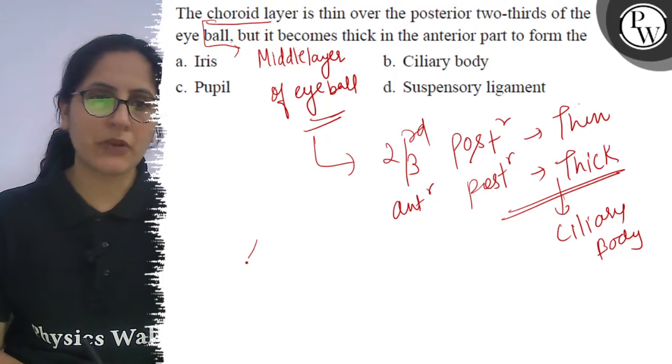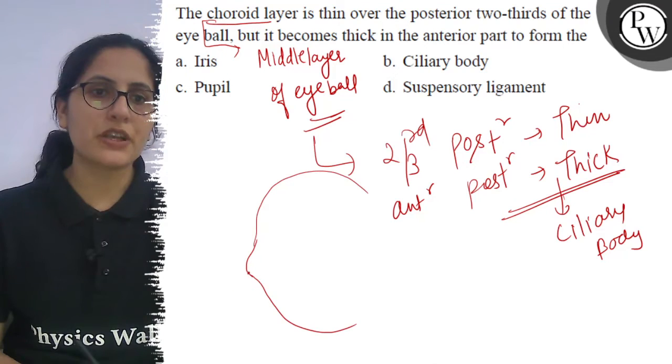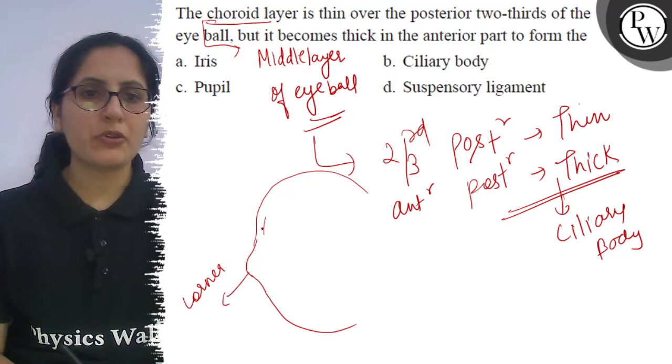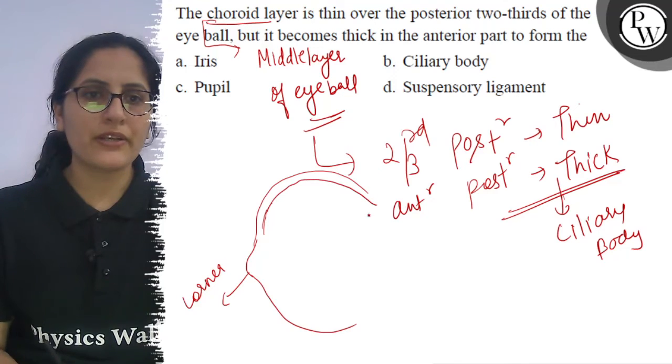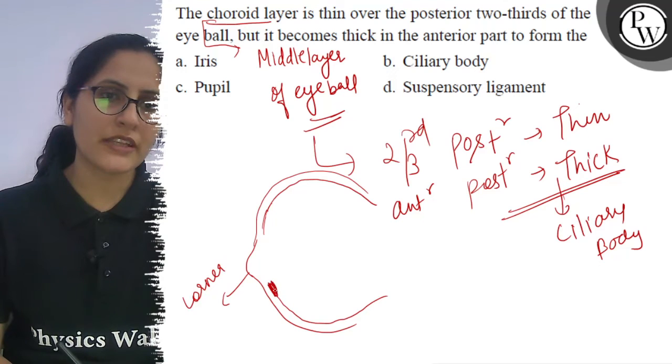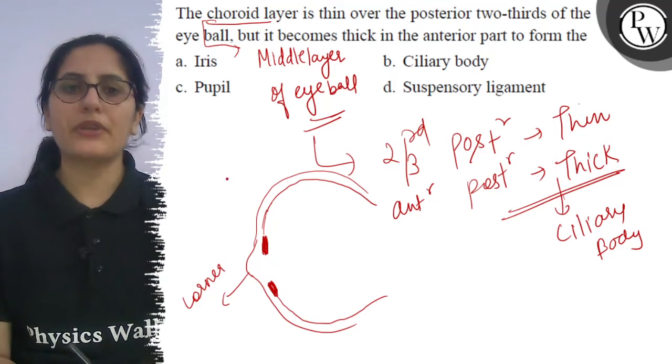The outer layer - the anterior portion is the cornea. Then the middle layer is the choroid and the posterior region is thin, but the anterior portion is thick and that is the ciliary body.